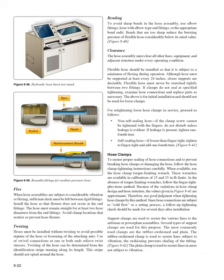The hose assembly must clear all other lines, equipment, and adjacent structure under every operating condition. Flexible hose should be installed so that it is subject to a minimum of flexing during operation. Although hose must be supported at least every 24 inches, closer supports are desirable. Flexible hose must never be stretched tightly between two fittings. For re-tightening loose hose clamps in service: non-self-sealing hose — if the clamp screw cannot be tightened with the fingers, do not disturb unless leakage is evident; if leakage is present, tighten one-fourth turn. Self-sealing hose — if looser than finger-tight, tighten to finger-tight and add one-fourth turn. Since hose connections are subject to cold flow or a setting process, a follow-up tightening check should be made for several days after installation.